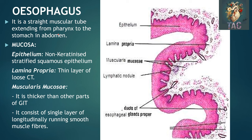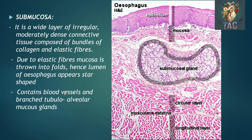Now we will discuss the esophagus in detail. The esophagus is a straight muscular tube that extends from the pharynx to the stomach in the abdomen. The mucosa is formed by stratified squamous non-keratinized epithelium. Beneath it is the lamina propria — loose connective tissue containing blood vessels, nerves, lymphatics, and a large number of lymphatic nodules forming the gut-associated lymphatic tissue. Outer to this is the muscularis mucosa, which is thicker than in other parts of the GI tract and consists of a single layer of longitudinally running smooth muscle fibers. Because of this muscularis mucosa, the lumen of the esophagus shows a star-shaped appearance.